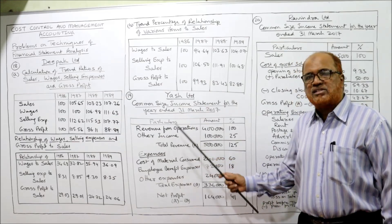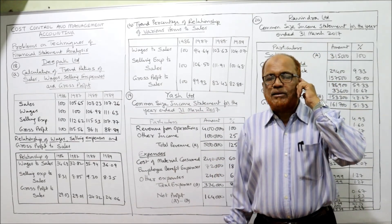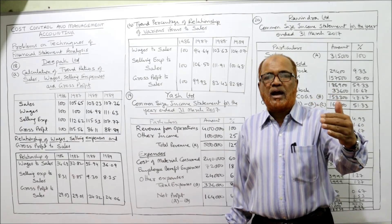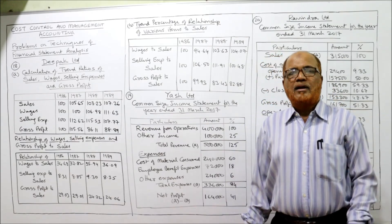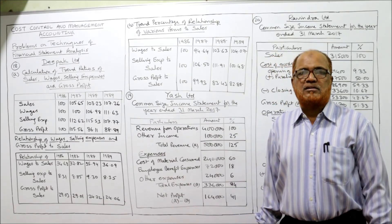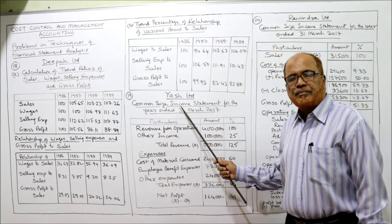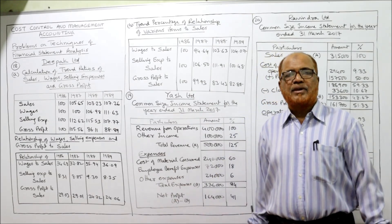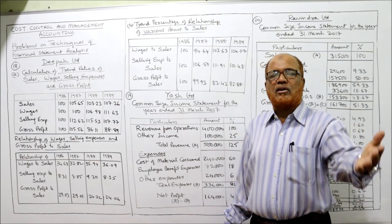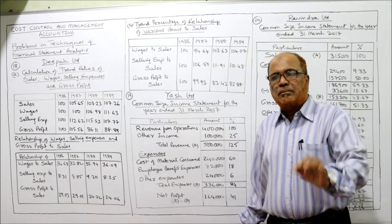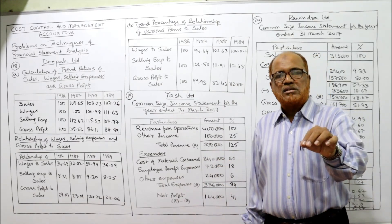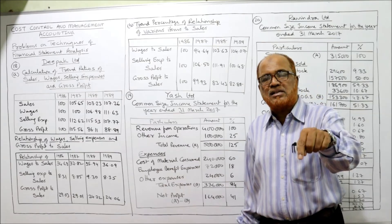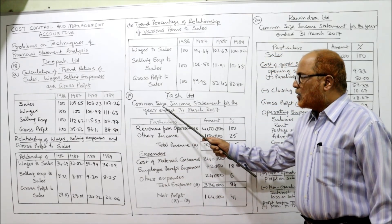In common size statement, one item is taken as the base and all other items are expressed as a percentage of sales. That means sales should be taken as 100%. If you are making an income statement, the biggest item will always be revenue from operations or sales — both mean the same. This revenue from operations will be taken as 100% and all other items are expressed as a percentage of sales.